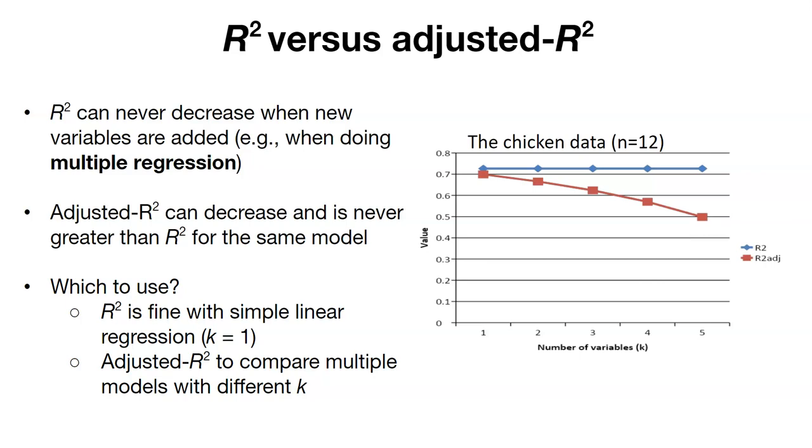As it turns out, R squared can never decrease whenever you add new variables, and we'll see this when we look at multiple regression. However, it's the adjusted R squared that can decrease, and it's never greater than R squared for the same model.